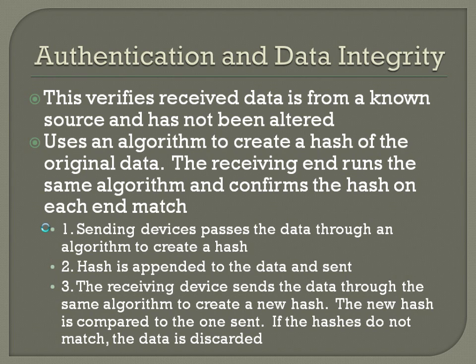The receiving device pulls that hash off of the actual data, sends the data through the same algorithm to create a new hash, and then that new hash is compared to the one sent by the sending device. If the hashes do not match, the data is discarded. If the hashes do match, it assumes the data is good and processes it.